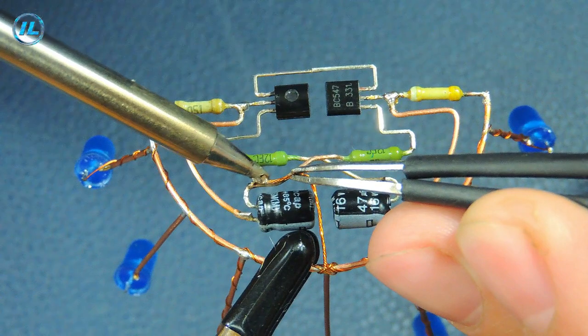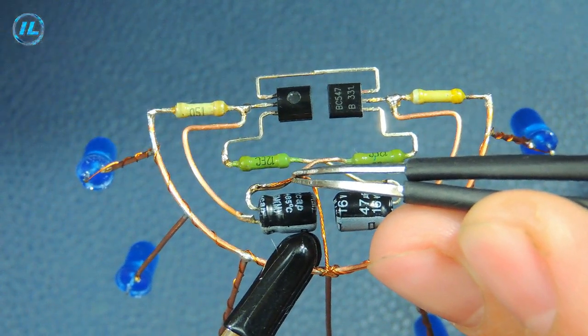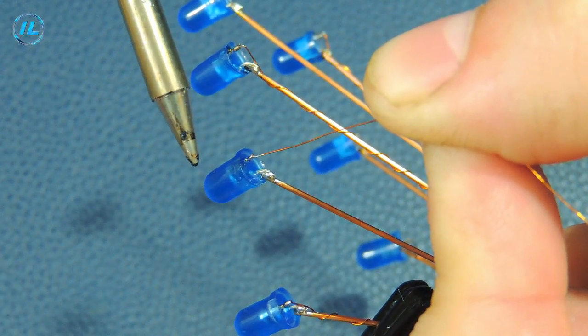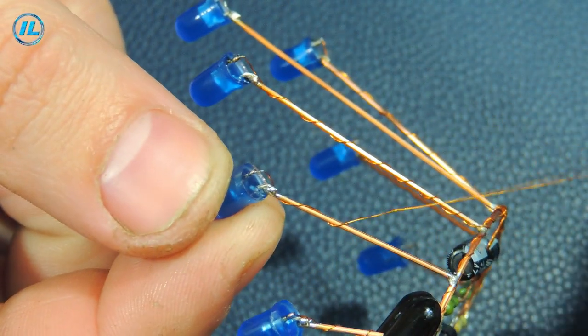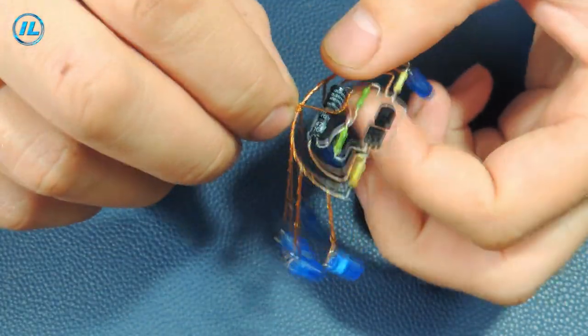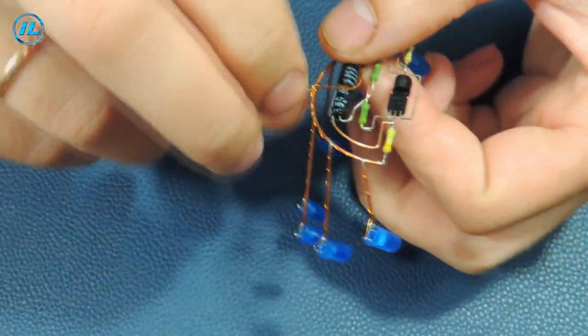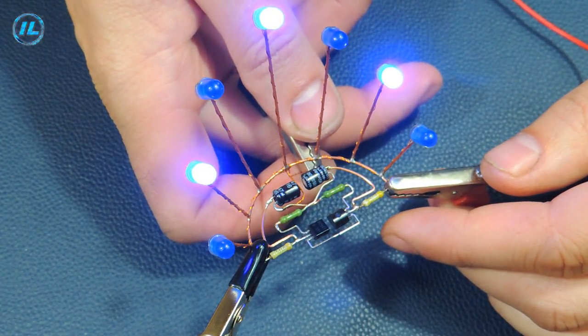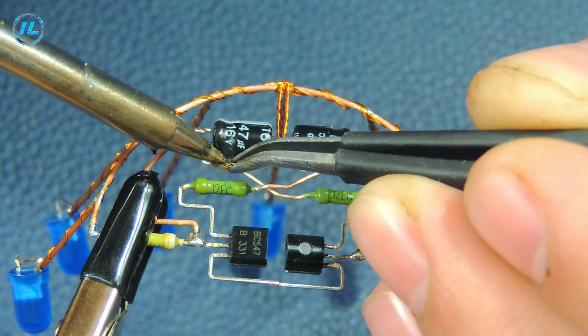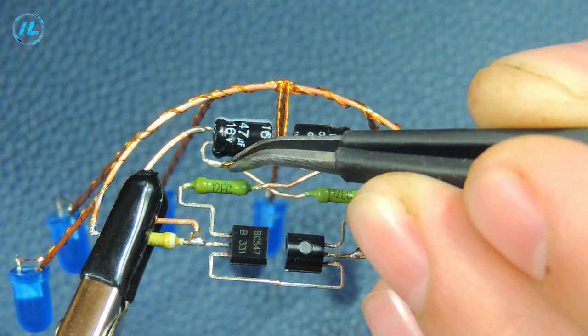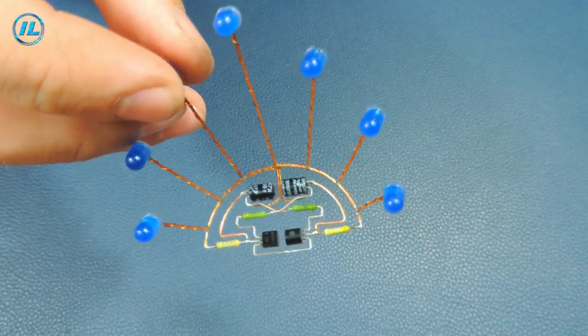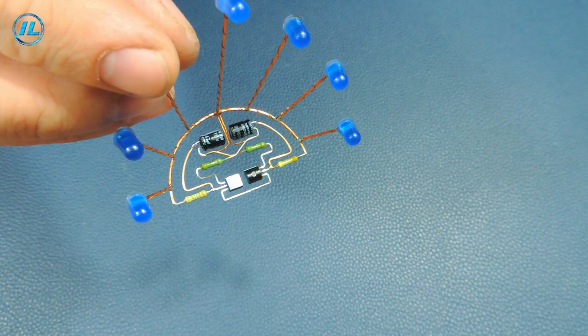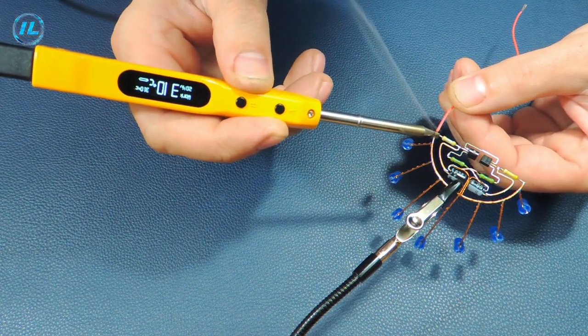All LEDs light up and now they can be connected. Everything is ready. Now I will solder the wires to supply the supply voltage, and it will be possible to see how this flasher works.